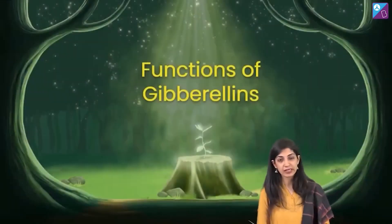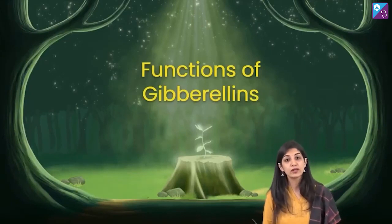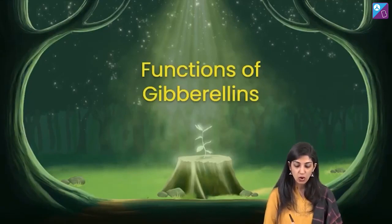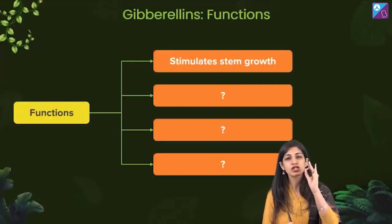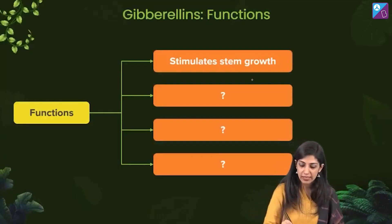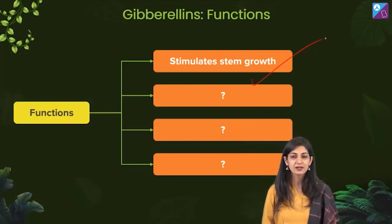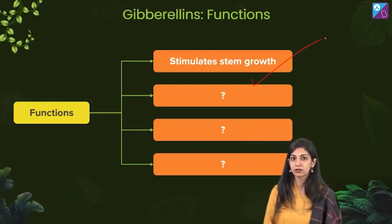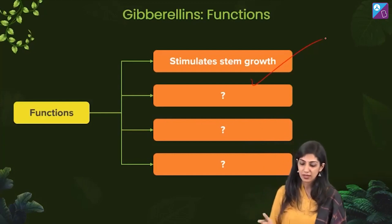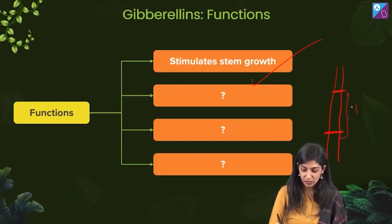Functions of gibberellins — time to pay absolute attention. What do they do in the plant body? The very first, primary function of gibberellins — remember I kept repeating the word 'tall' — it stimulates stem growth. Now, what is the main feature of a stem? The nodes and the internodes.